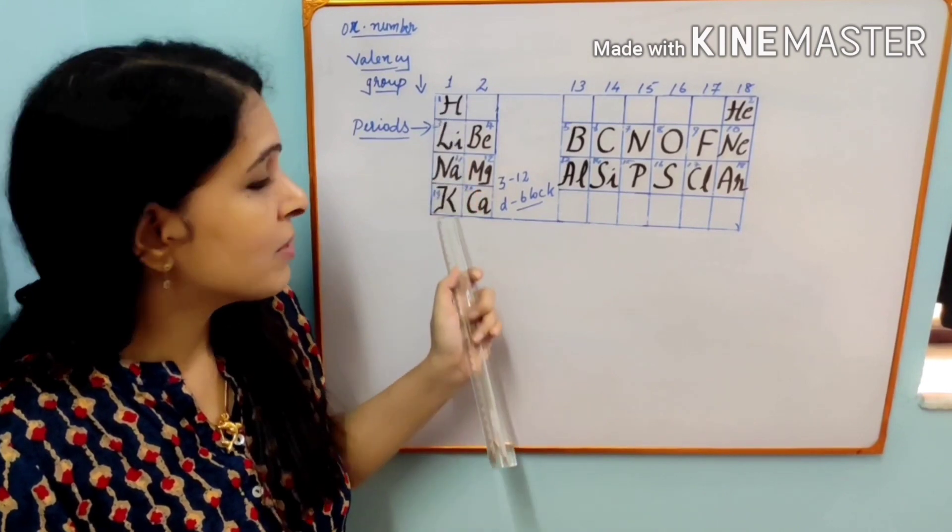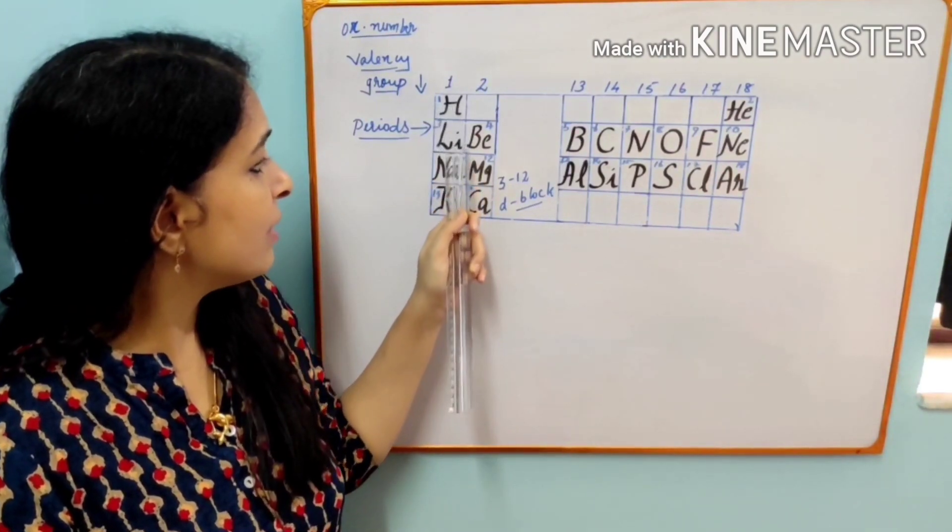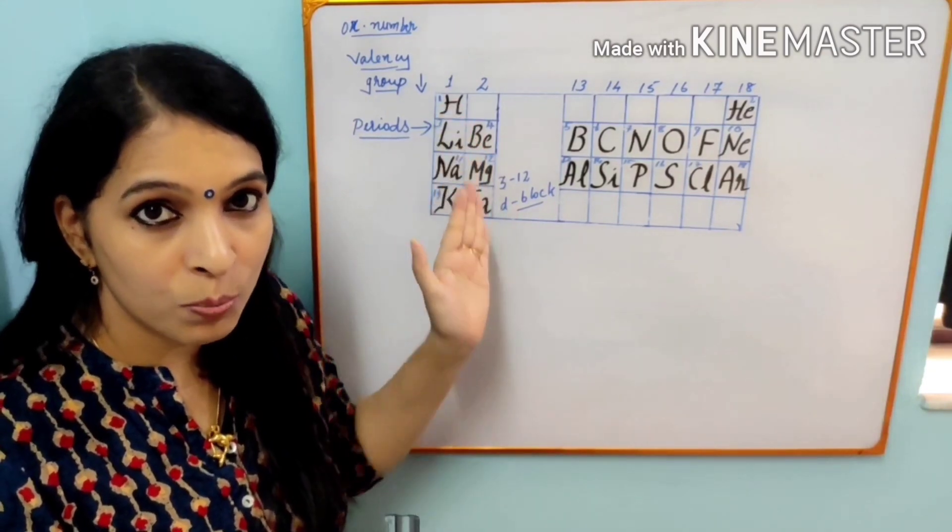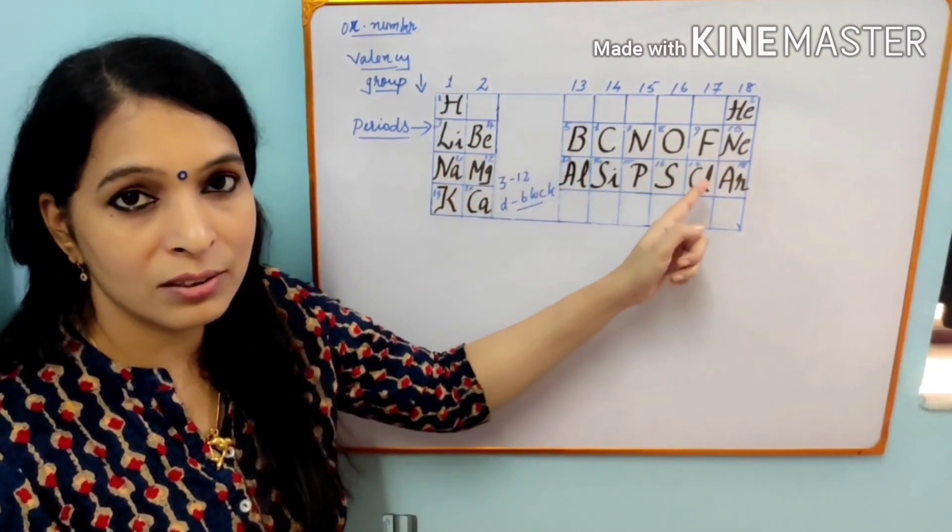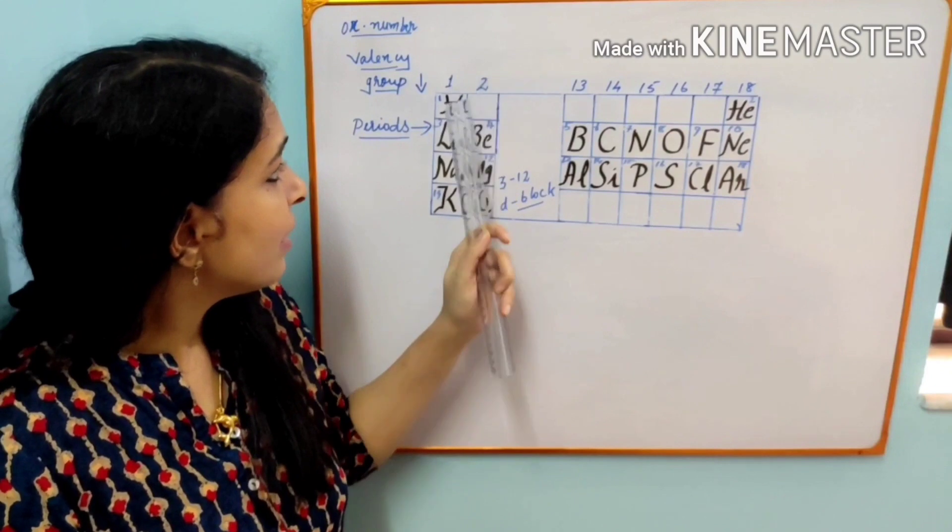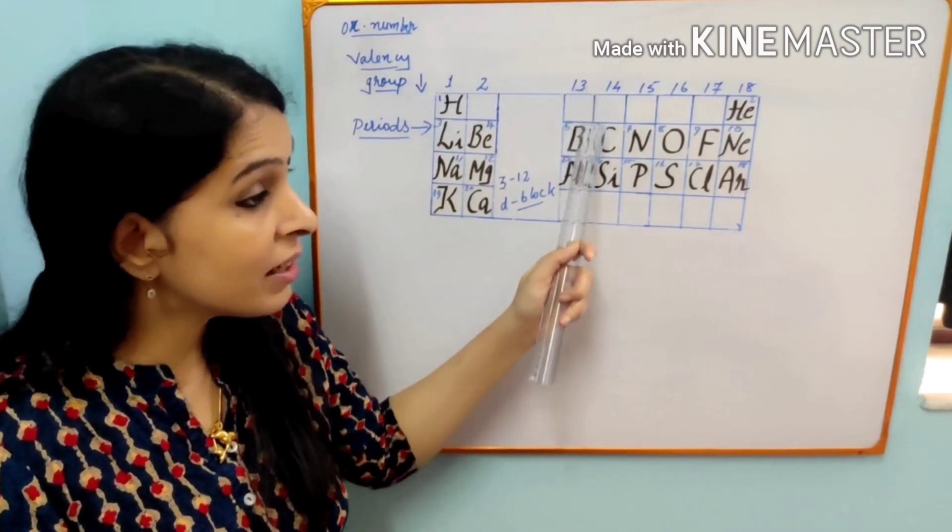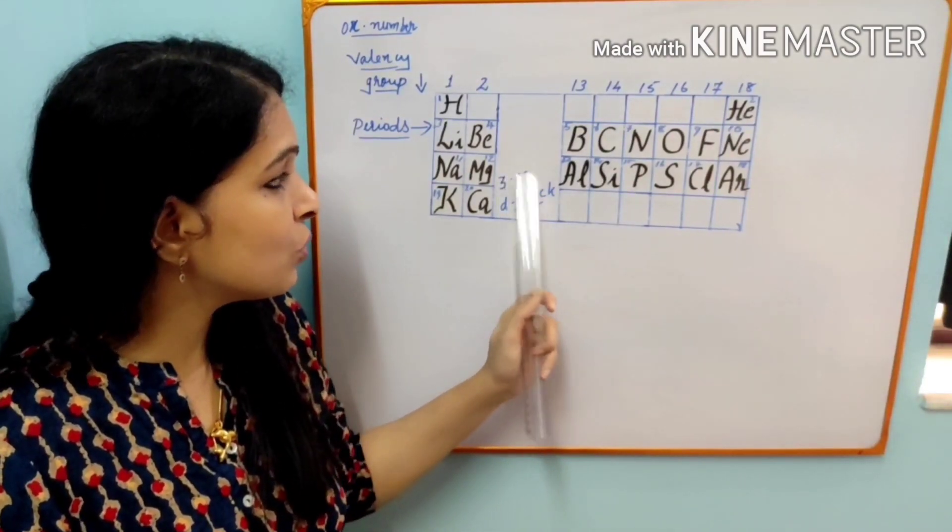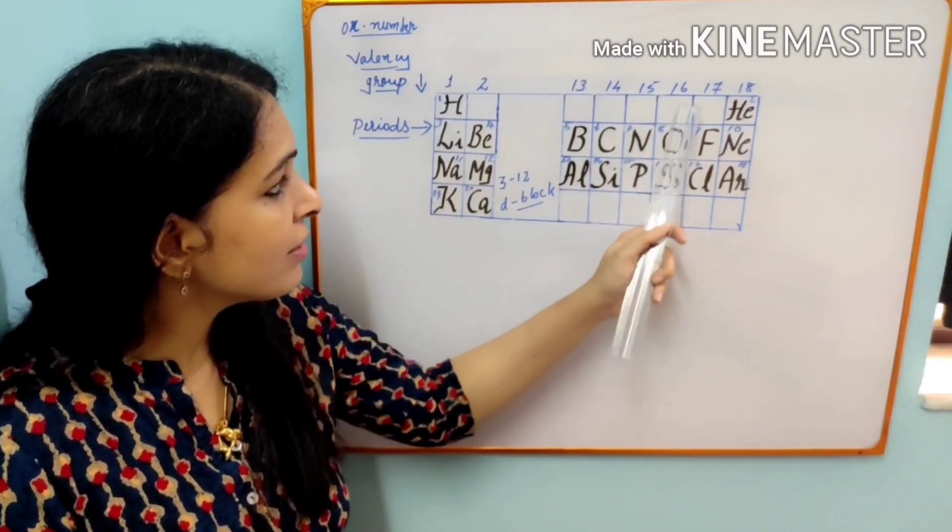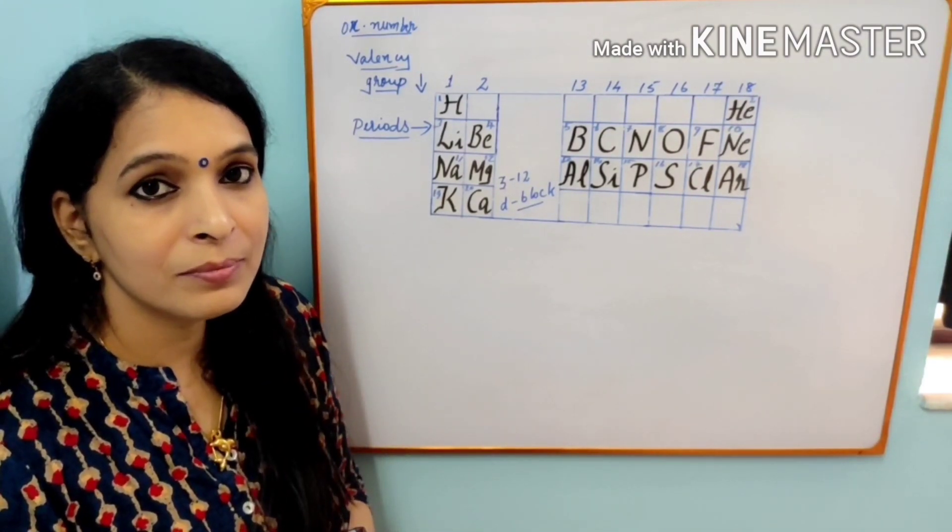Now, let us see little facts about the periodic table. The vertical columns are known as groups. That means, this is the first group: hydrogen, lithium, sodium, potassium are coming in the first group. But don't study group wise. You should study it in an order. And the second group consisting of beryllium, magnesium, calcium. And this is the 13th group. In between 3 to 12 groups, we are not studying now. This is 14th group, 15, 16, 17 and 18.